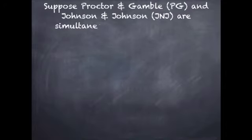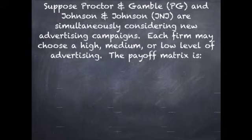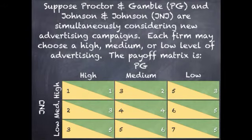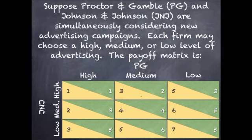In this one, it states: Suppose Procter & Gamble (P&G) and Johnson & Johnson (J&J) are simultaneously considering new advertising campaigns. Each firm may choose a high, medium, or low level of advertising. The payoff matrix shows the three strategies — high, medium, and low — for both firms. Each of the nine cells in the payoff matrix gives the individual payoffs for when J&J and P&G select a specific advertising strategy.